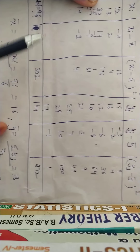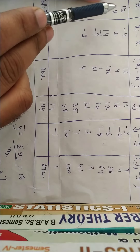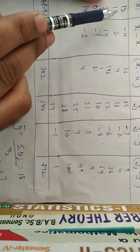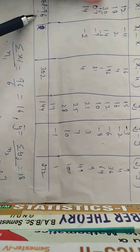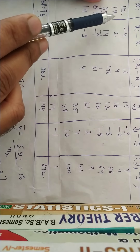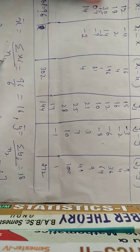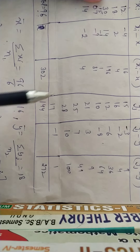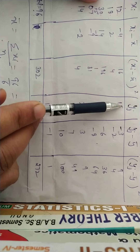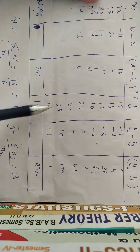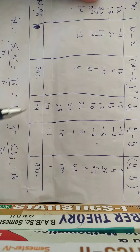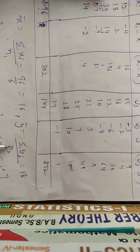Summing the X entries: 12 + 18 + 30 + 15 + 7 + ... = 96. There are 6 entries, so dividing 96 by 6 gives X-bar = 16. Similarly, for the Y entries — there are 8 values — their sum is 144. Dividing 144 by 8 gives Y-bar = 18.